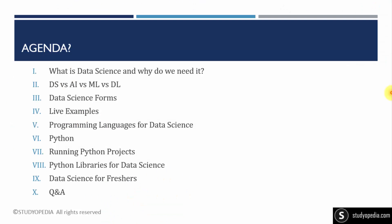Here's the agenda for the session. First, we will discuss what is data science and why do we need it. You must have seen different terms associated with data science — artificial intelligence, machine learning, deep learning, and data science all together. We will see the difference between them using a Venn diagram, which is the easiest way to understand. We'll also display some live examples.